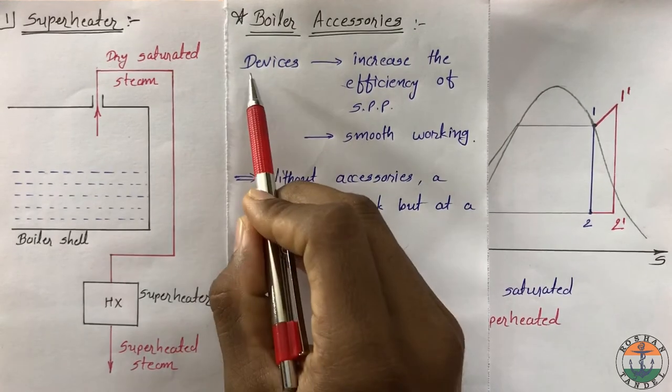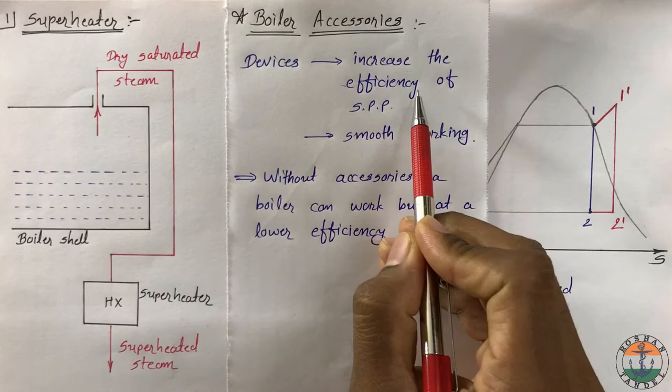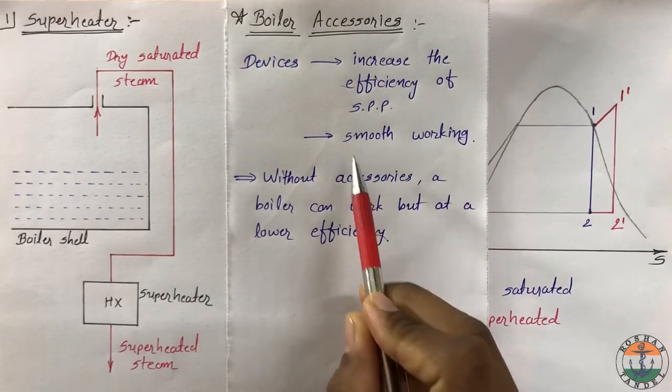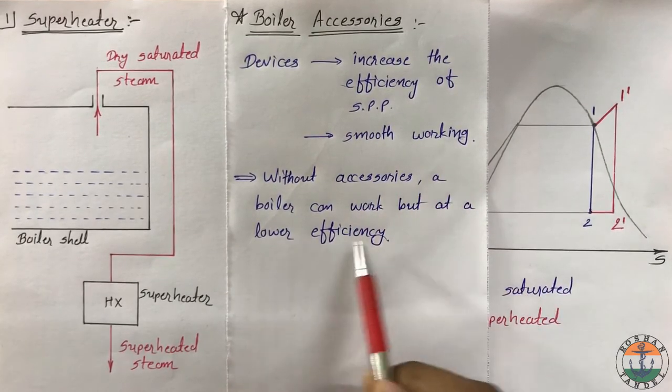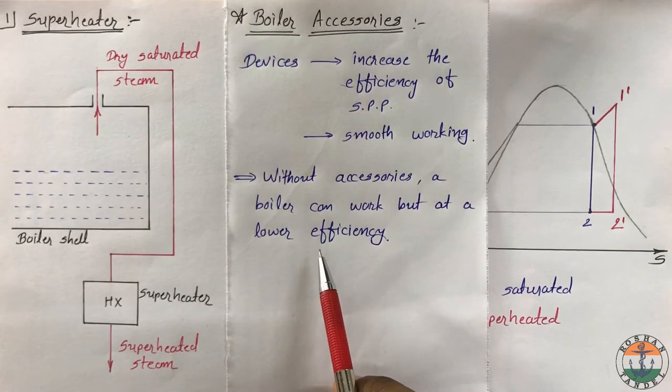Boiler accessories are devices which are installed to increase the efficiency of steam power plants and ensure smooth working. Without accessories, a boiler can work but at lower efficiency.